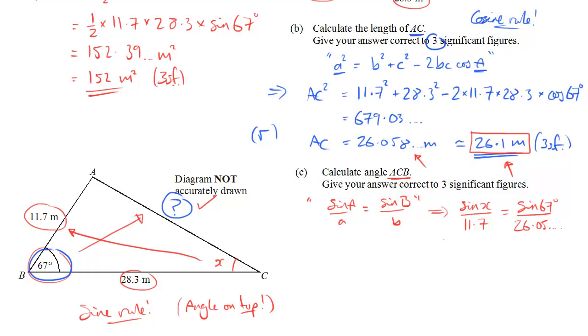So to solve this, we've got to get rid of the 11.7 on the bottom. So we do that by multiplying. If we multiply both sides by 11.7, on the left we're left with simply sine X. On the right, we now have 11.7 sine 67 over the same denominator, 26.05.